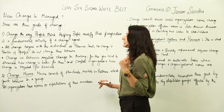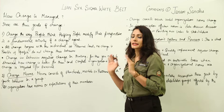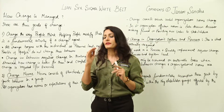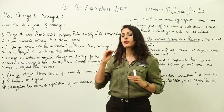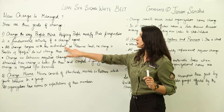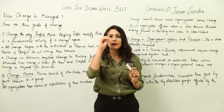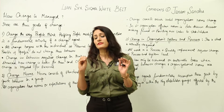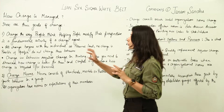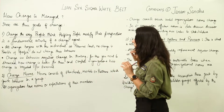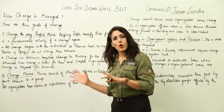Helping people modify their perspective is a fundamental activity of a change agent. Until you change how people think about their work, nothing will shift. All change begins at the individual, personal level. If you can't convince an employee that what you are proposing is better for them and for the survival of the organization, they are not going to change. Change in behavior requires change in thinking, and you need to showcase how the change is better for both the individual and the complete organization.